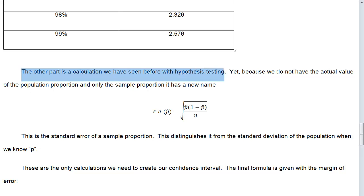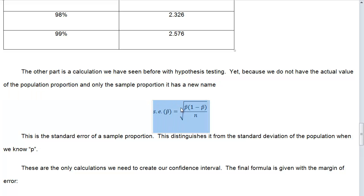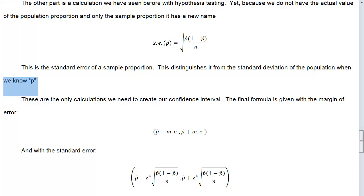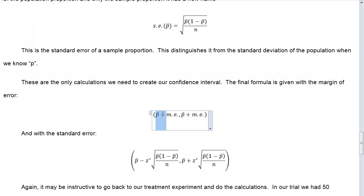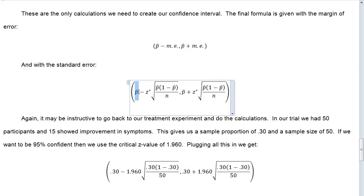The other part is a calculation we've seen before with hypothesis testing. However, because we don't have the actual value of the population proportion and only the sample proportion, it gets a new name — we call this the standard error of our sample proportions. We use p-hat, and because p-hat is an estimate, there is some error — it's not the exact deviation. This distinguishes itself from the standard deviation of the population we know with P. These are the only calculations we need to create our confidence interval, given with the margin of error as: p-hat plus or minus Z-star times the standard error.